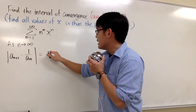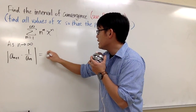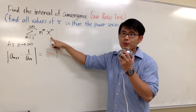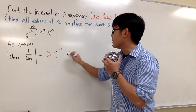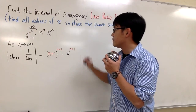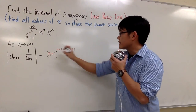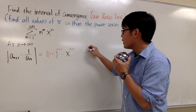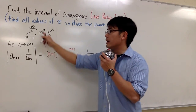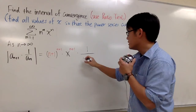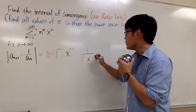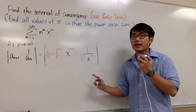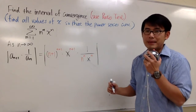So we will first get (n+1) raised to the n+1 power, and then we will have x to the n+1. This is the a_{n+1} term, and now we multiply by 1 over a_n, which gives us n to the n and x to the n. We include the absolute value because we don't know what x is yet.